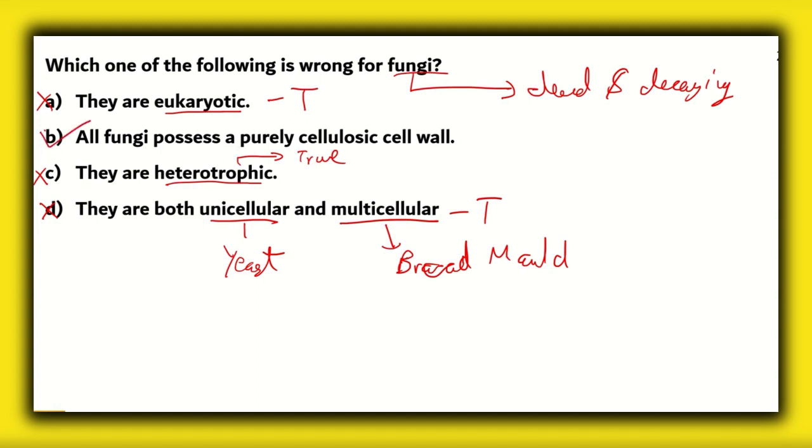That means the correct option is option B. All fungi possess a purely cellulosic cell wall. Now, this particular portion is incorrect because the cell wall of fungi is made up of chitin. Now, chitin is a polymer comprised of N-acetyl glucosamine monomers. So, that is not cellulose because cellulose contains beta-rotated glucose. So, that means option B is the wrong option. And here, the question is asking for the wrong option, the wrong statement. So, that means option B is correct.